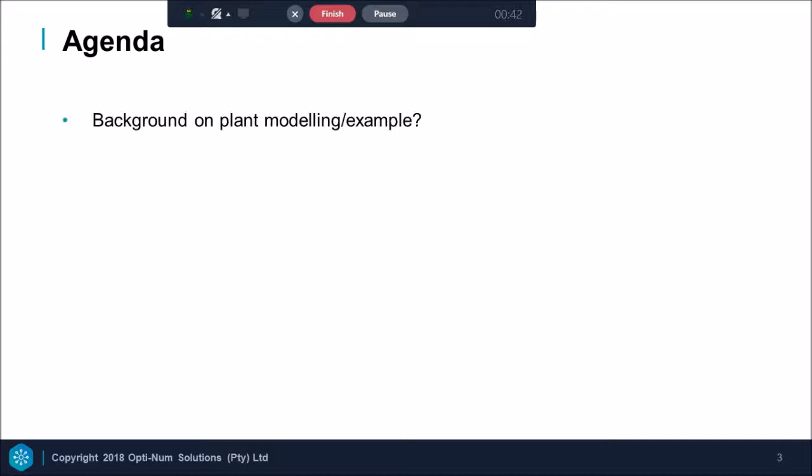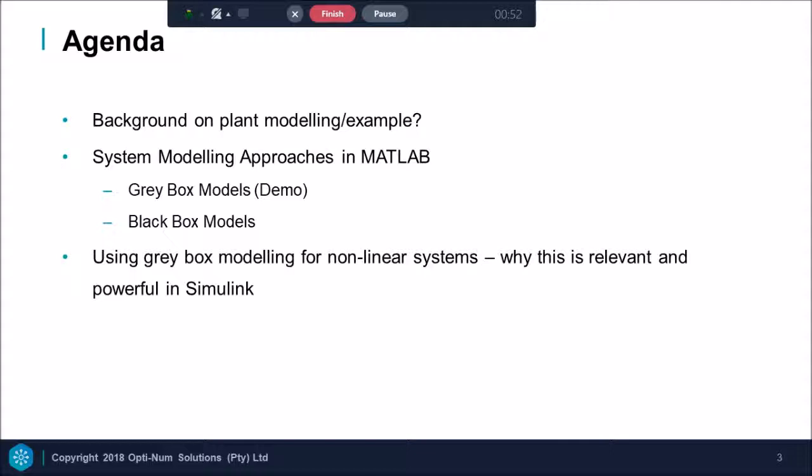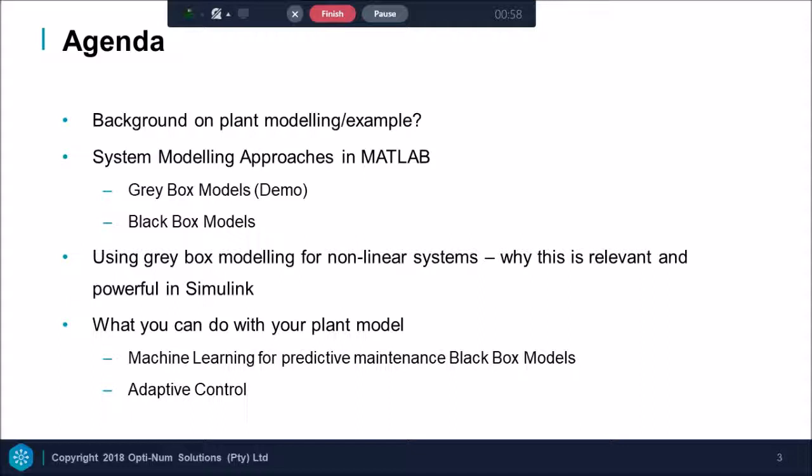To achieve these goals, I will explain what plant modelling is about. I will briefly explain the approach to systems modelling, then I will do a demonstration on how grey box modelling is used. How this could be equivalently achieved in Simulink, then after we understand the dynamics and parameters of our plant, we will look at predicting sensor failure, maintenance and predictive control.